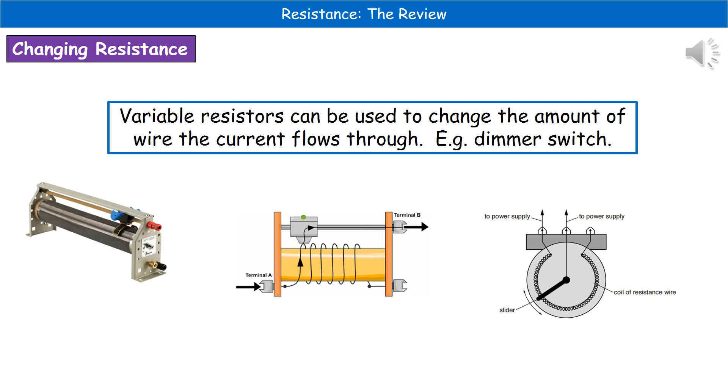The last thing we need to consider about our resistance are these devices called variable resistors. What these will actually do is change the amount of resistance by changing the amount of wire the current is flowing through. An example that you might have in your own homes is a dimmer switch for your lights.